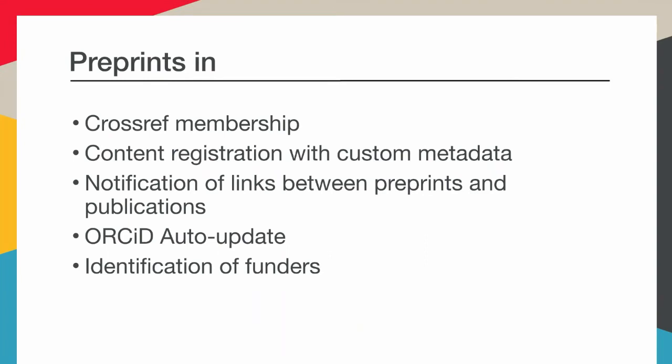As part of accepting preprints, we allow Crossref members to deposit preprints and join to deposit preprints. We allow members to register content and DOIs with us. We have custom metadata — a specific schema — that lets publishers of preprints deposit information with us in such a way that it shows preprints as a distinct article type from, say, a journal article, a book chapter, or a piece of grey literature, so that it's clear to anyone using the metadata what it relates to.